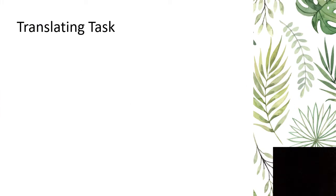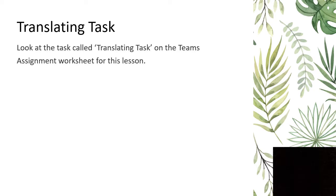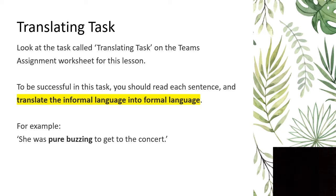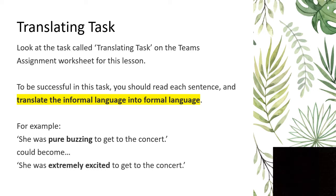The next task is called the translating task, and again it's labelled exactly the same way on the Teams assignment worksheet. To be successful, read each sentence and try to translate the informal language into formal language. Some sentences are going to be a bit too chatty, so you'll need to look at what the sentence is trying to say and translate it into a more professional, respectful version. For example, 'she was pure buzzing to get to the concert' is informal — you might translate that to 'she was extremely excited to get to the concert.' Pause the video and try that one now.